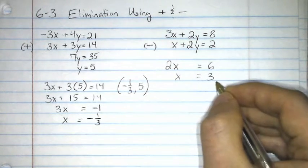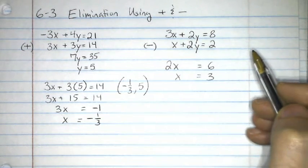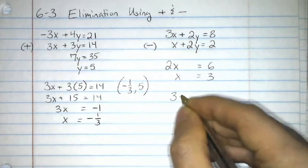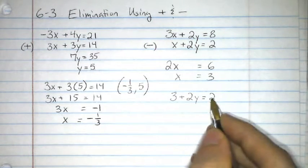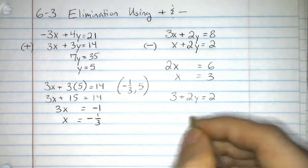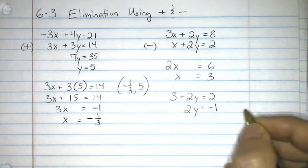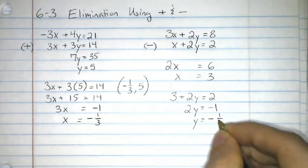Now that I know x equals 3, I can substitute this into either equation. I'll choose the bottom one here. So, we have x, which is 3, plus 2y equals 2. I subtract 3 on both sides. I end up with 2y equals negative 1. Divide both sides by 2. We get y equals negative 1 half.